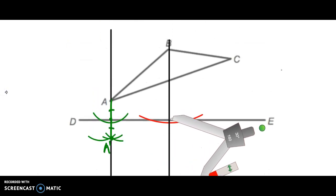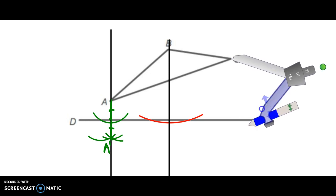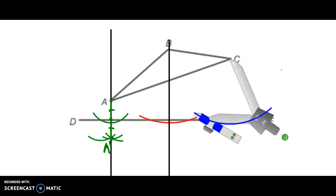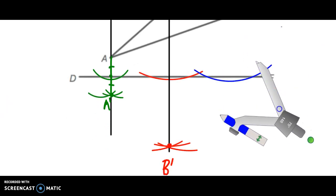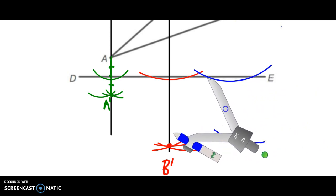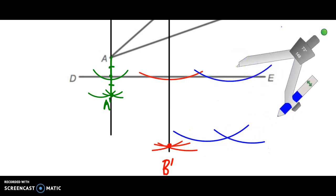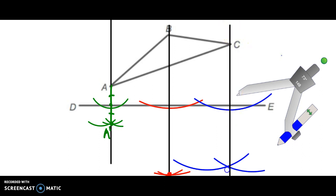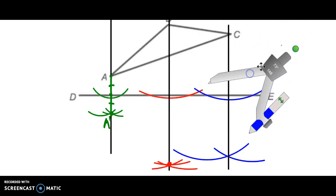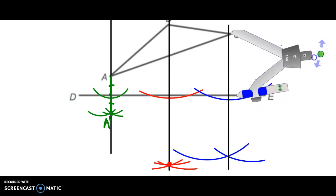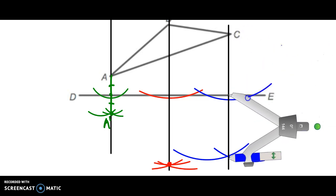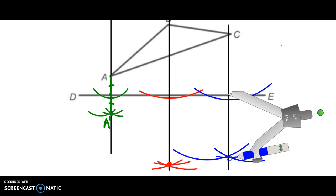And we will repeat these steps one more time for C. I put my compass on the pre-image point. I make an arc that crosses the line of reflection to make my perpendicular line through a point not on the line. Through those two arcs, I can put a point. So now we measure from our pre-image point to the line of reflection. And we repeat that distance on our perpendicular line. So there's where C prime will go.